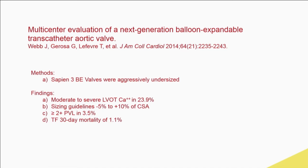Plugging these valves is very difficult — it's not like plugging a surgical prosthesis. For CoreValve it's harder because the frame is longer, but for Sapien valves with a big leak, ABP4s through a 4 or 5 French catheter are relatively easy to deliver. Success rate in delivery is essentially 100%; success rate in acutely closing the leak is 80% or greater.